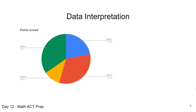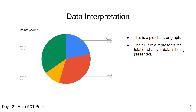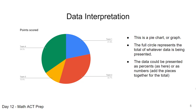Here we have an example of a pie chart, and sometimes we see these where the whole chart represents the whole of whatever we're looking at. In this case, it looks like it's four teams that have scored points, and the full circle represents the total of whatever is being presented. Each of the four teams is shown, and the data could be represented as a percent, or they could give us numbers. To find a percent, we take each individual number and divide that by the whole.